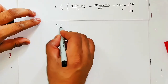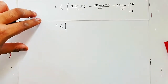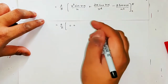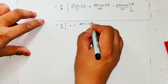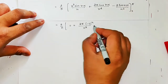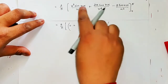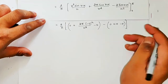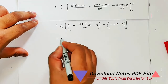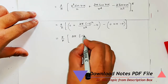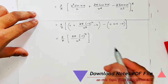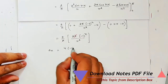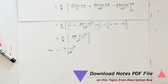Ab dekho kitni jaldi hogi. Toh 2/π — pehle upper limit put hogi minus lower limit. Upper limit put kijiye: π scale rahega, sin(nπ) = 0. Plus 2π × cos(nπ) = (−1)ⁿ — yeh main bata chuka hoon. Aur sin(nπ) dobara aayega toh 0 aayega. Lower limit 0 put karo: 0 into something = 0, 0 into something again 0, aur sin 0 = 0. Toh simplify karke bache 2/π × 2π × (−1)ⁿ/n². Ek π kat jaayega. Aₙ aaya: 4(−1)ⁿ/n².